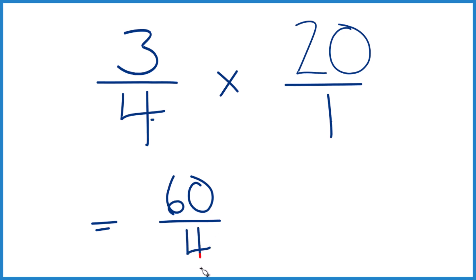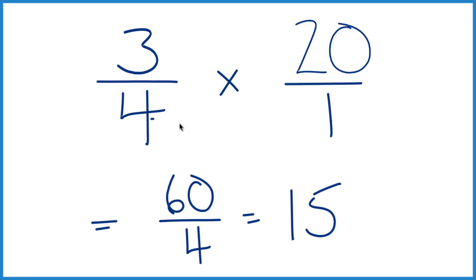And 60 over 4, 4 goes into 60 15 times. 15 times 4, that's 60. So when we take three-fourths of 20 here, we get 15.